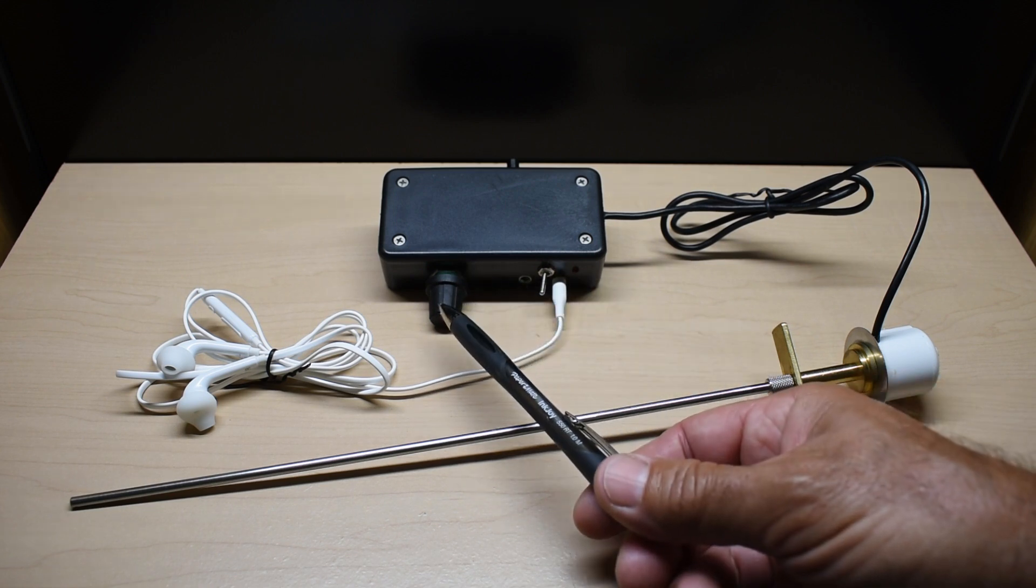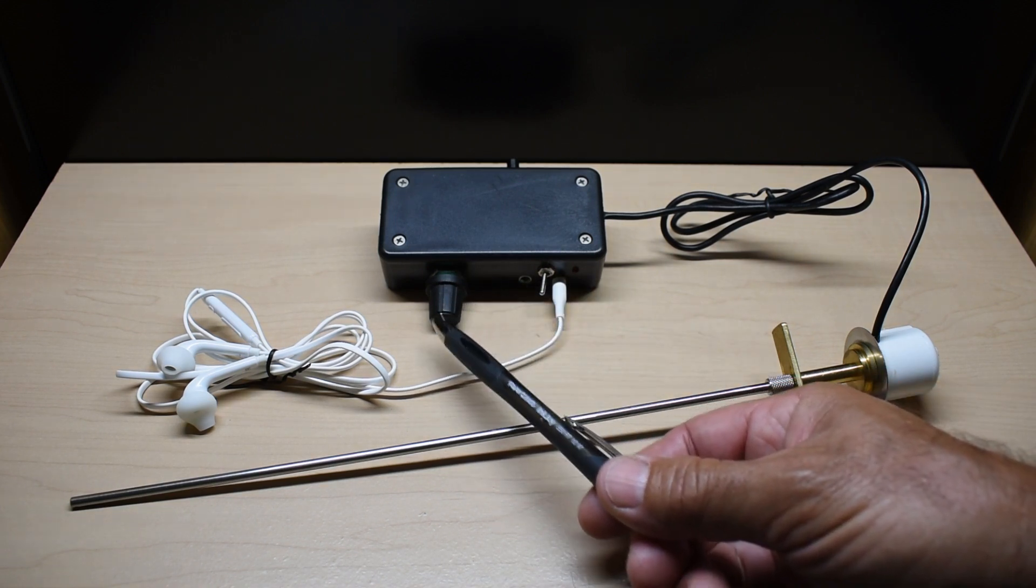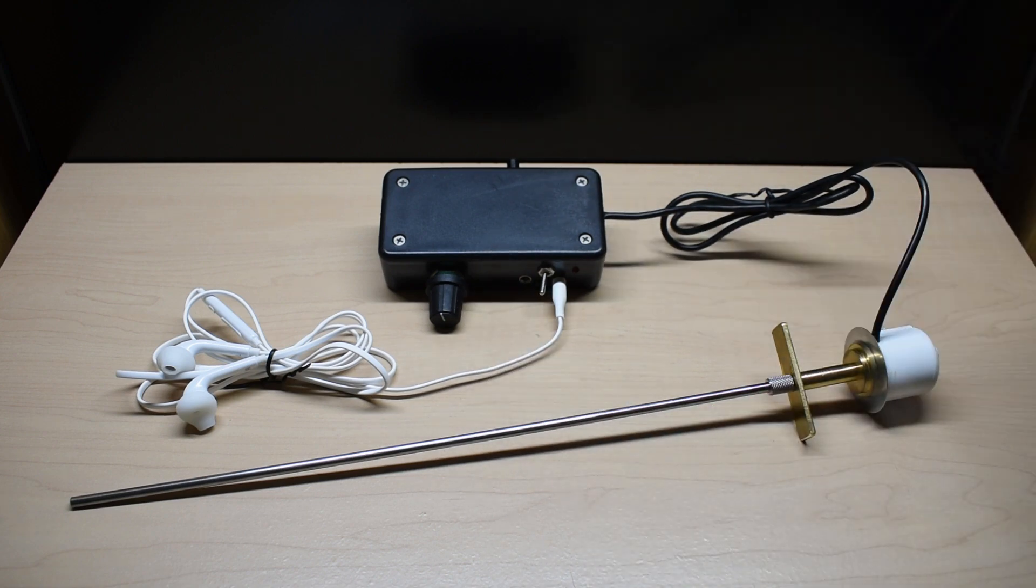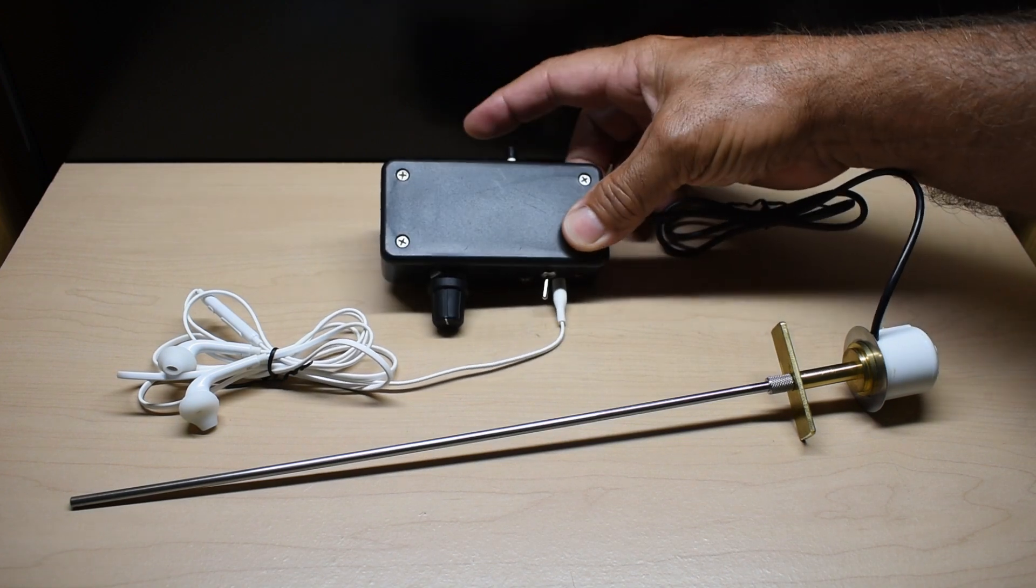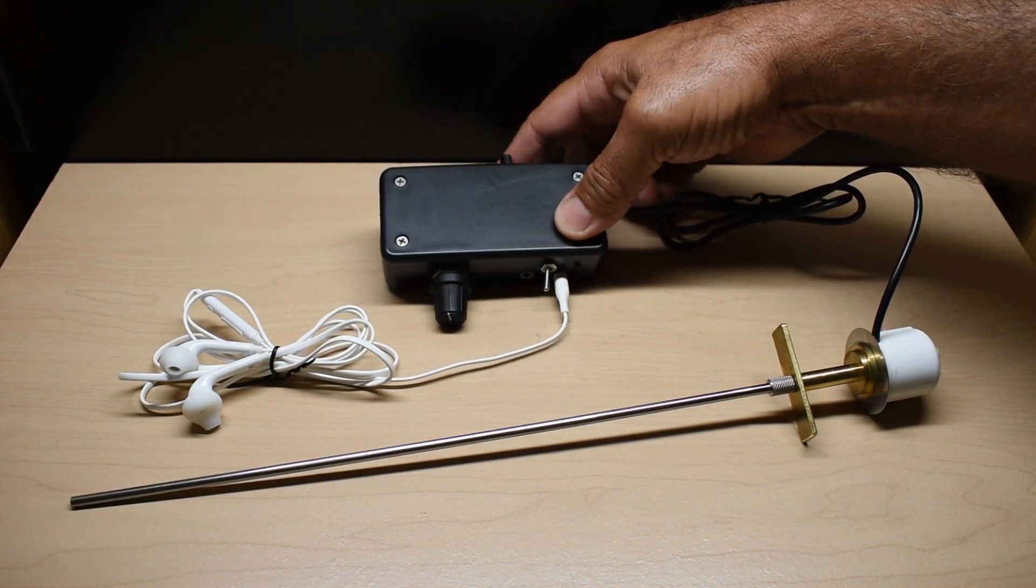This knob right here is your gain. Counter clockwise fully is low. Clockwise to the max is going to give you the highest gain. And back here is a button. Push on that. That adjusts the tone of the sound.